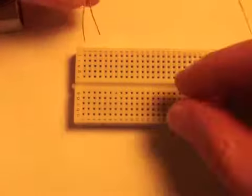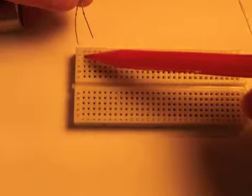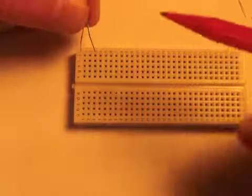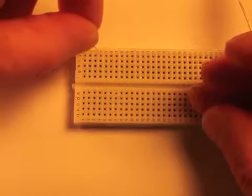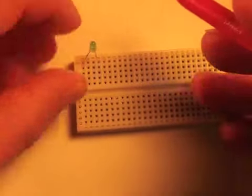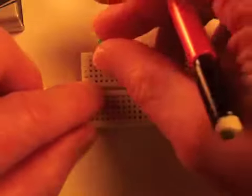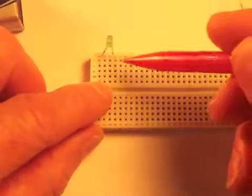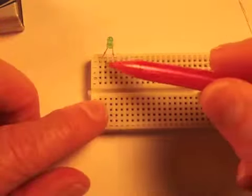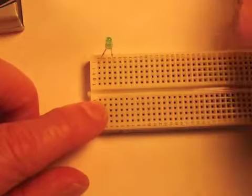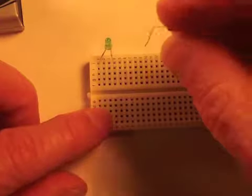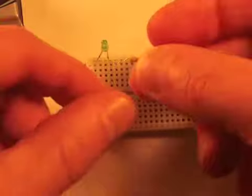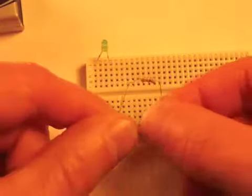And I'm going to put the long lead in this first row here, row number one. I'm just going to spread these legs apart on the diode a little bit. And it doesn't really matter where we put these in, just so that we pay attention to how the electricity is flowing through here. So I have bent my resistor legs like this.